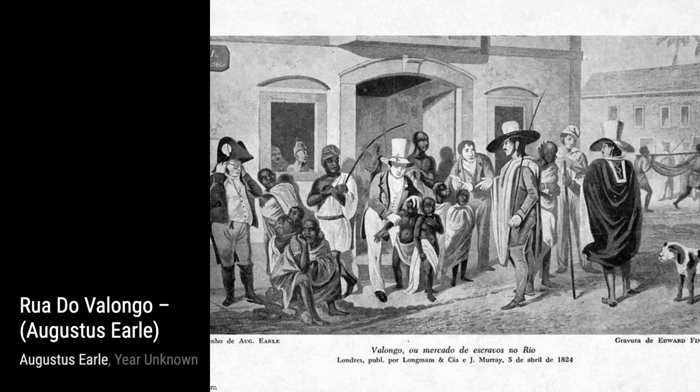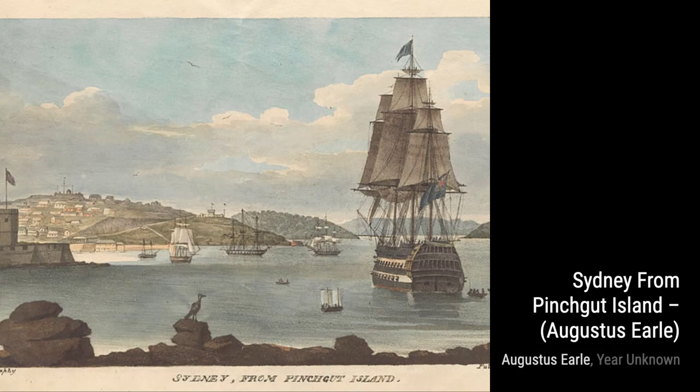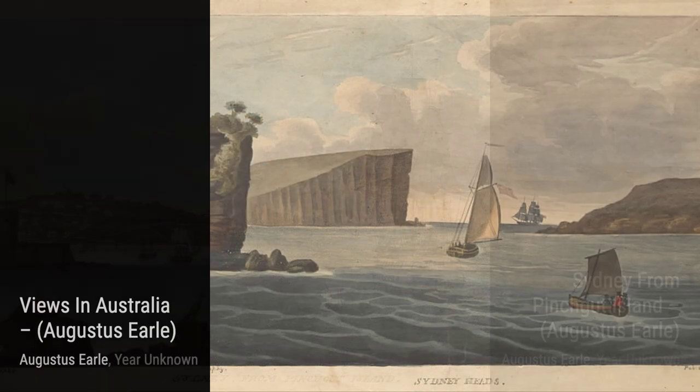In Life in the Ocean, representing the usual occupations of the young officers in the steerage of a British frigate at sea, Earl showcases the daily lives of young officers, highlighting their various tasks and duties while at sea.